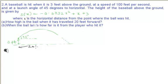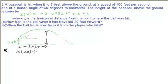When the ball has traveled 20 feet forward, suppose this is the point at 20 feet — what is the height of the ball? We need to calculate S(x). It means we want to calculate the height when it has traveled 20 feet forward. X represents the horizontal distance, so S(20) is obtained by substituting x = 20 in the given equation.